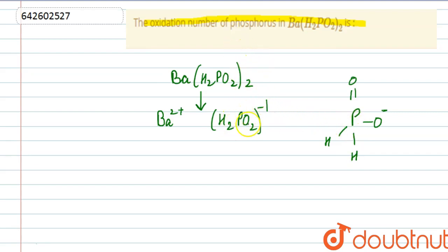Now we know the oxidation number of hydrogen is +1, so it will be 2 times 1. We don't know the oxidation number of phosphorus, let us assume it is x.